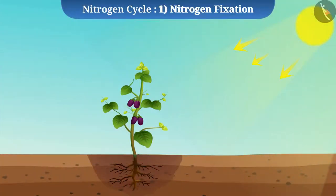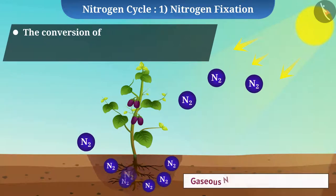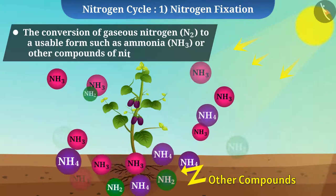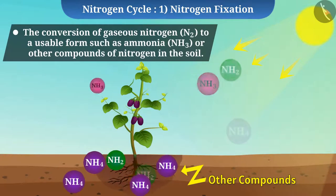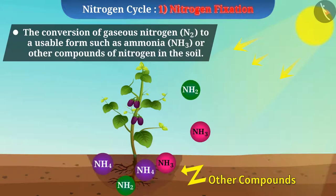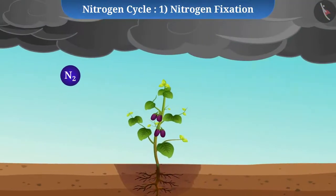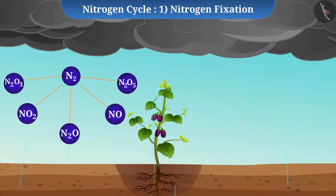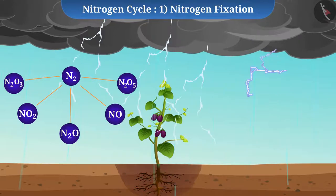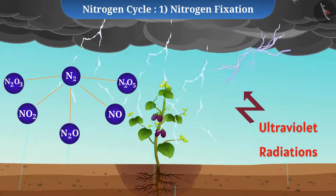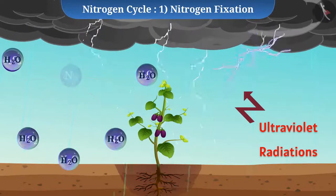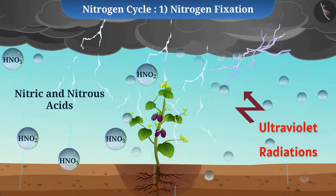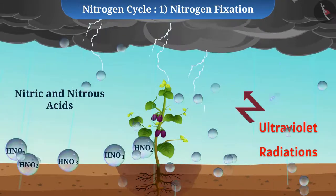Nitrogen fixation is the conversion of gaseous nitrogen to a usable form such as ammonia or other nitrogen compounds in the soil so that plants can use them. In the atmosphere, nitrogen gas is converted to oxides of nitrogen using energy generated during lightning and from ultraviolet radiations. These oxides dissolve in water to give nitric and nitrous acids, which fall on land with rain and become readily available for use by plants.